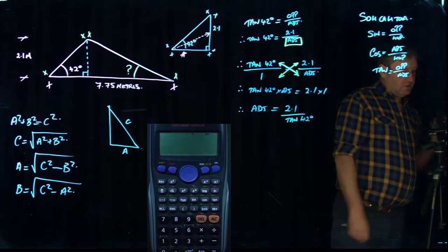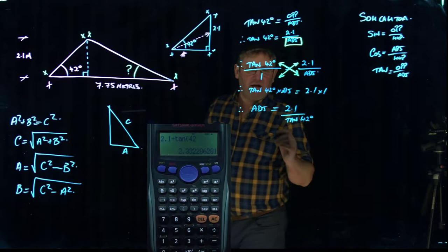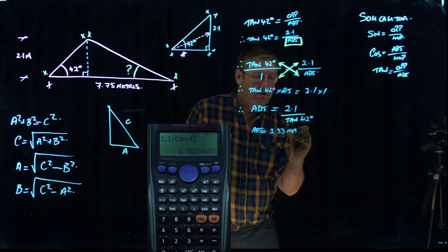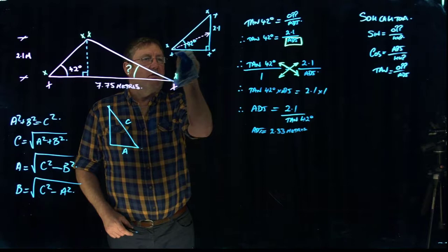So here we go. So we've got 2.1 divided by tan 42 equals. So we get a figure here. The adjacent equals 2.33. 2.33. And that's going to be meters because the figure we started out with is meters here. So this figure here, that there is 2.33 meters.